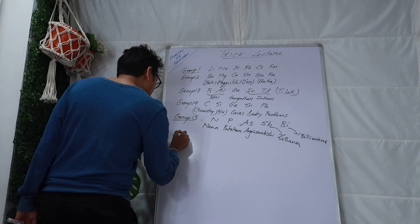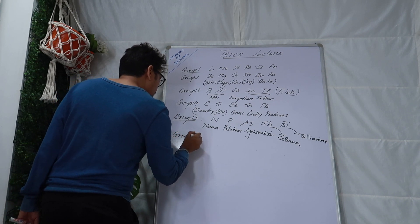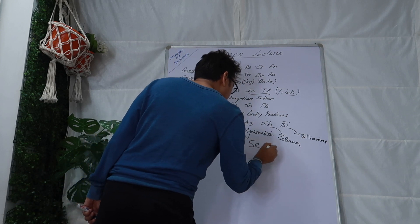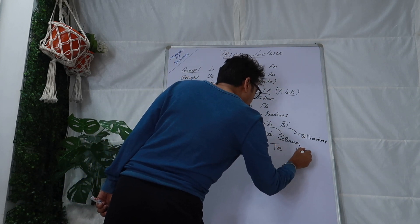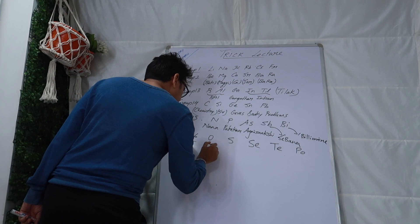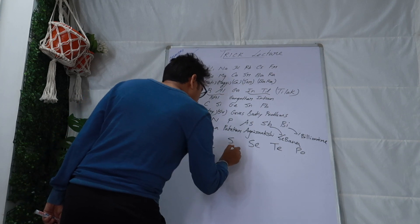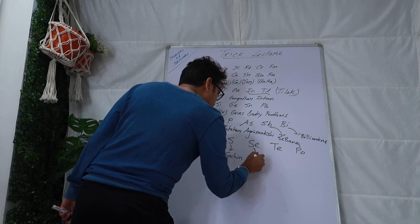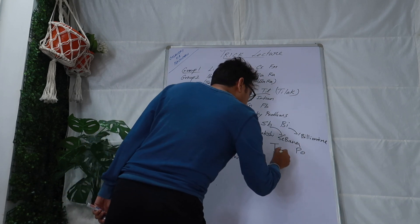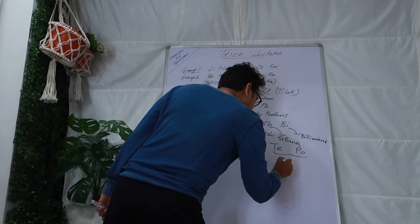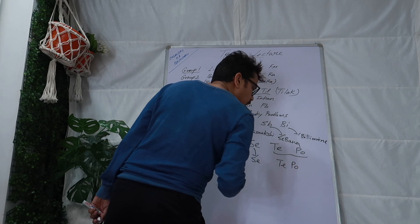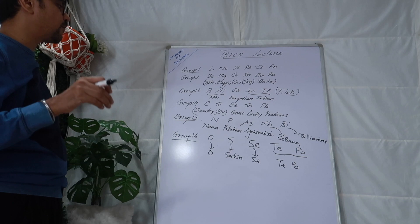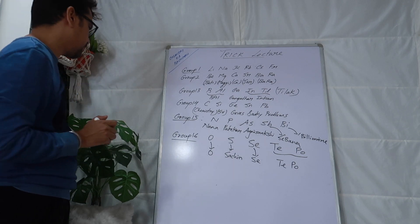Group 16 mnemonic is: O Sachin Se T Po. O is oxygen, Sachin is sulfur, Se is selenium, and T Po means copy — tellurium and polonium. So group 16 is: oxygen, sulfur, selenium, tellurium, polonium.